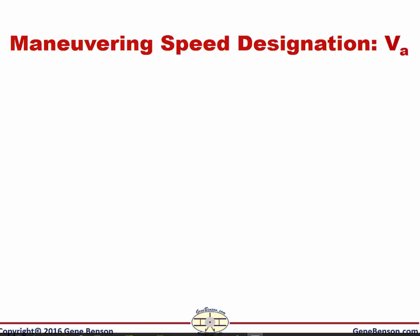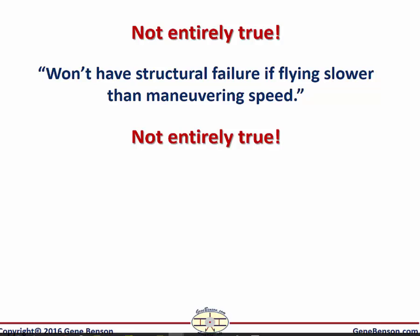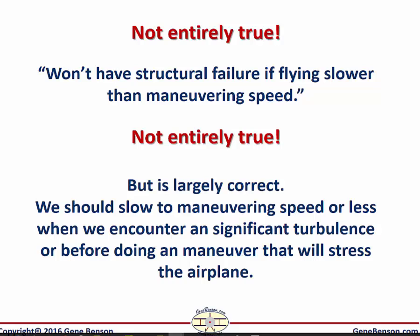Let's quickly review the concept of maneuvering speed, designated as V-sub-A. It's not depicted on the airspeed indicator, but is most likely shown on a placard somewhere inside the cockpit. You may have been taught that if you are flying at an airspeed slower than maneuvering speed, you are immune from suffering a structural failure. That turns out to not be totally true, but it is largely correct.